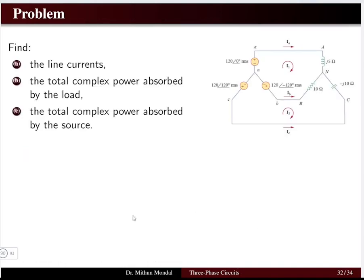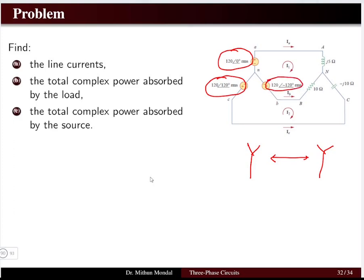Let us look at a problem to understand the unbalanced condition. We have a system where the source is star-connected and the load is also star-connected. The source has an amplitude of 120 volts with a 120-degree angle difference between phases, so the source is balanced. However, if we look at the impedances of the three phases, they are different — resistance, inductance, and capacitance with different magnitudes — so the system is unbalanced. We need to calculate the line current, the total complex power absorbed by the load, and the total complex power absorbed by the source.